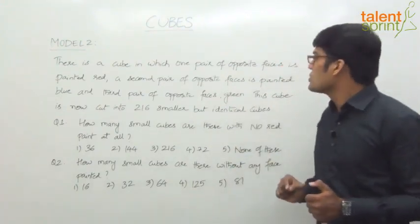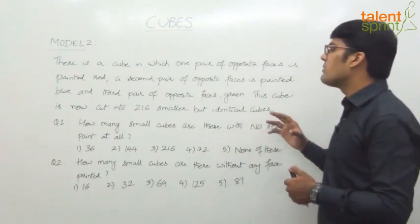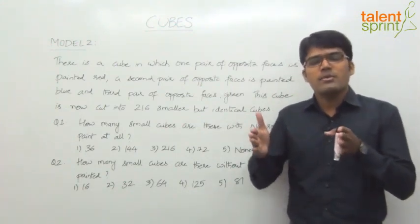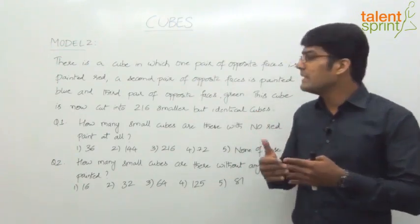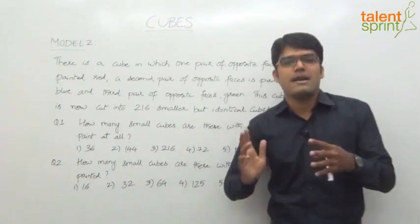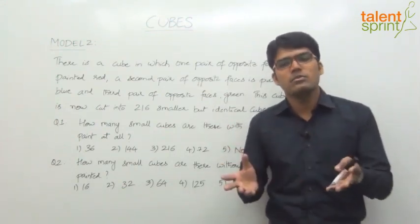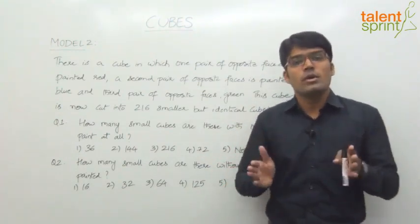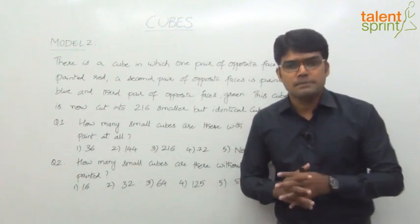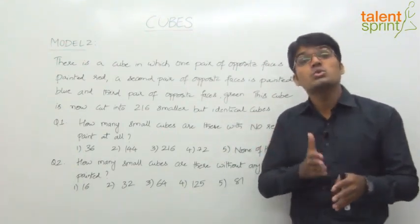The question says there is a cube in which one pair of opposite faces is painted red, a second pair of opposite faces is painted blue, and a third pair of opposite faces is painted green. So six faces total: one pair painted blue, one pair painted green, one pair painted red. Whichever pair you assign to which color does not matter — it will appear identical. The only point is opposite faces are painted in the same color. Now this cube is cut into 216 smaller but identical cubes.